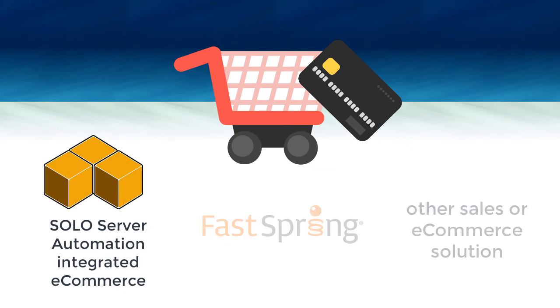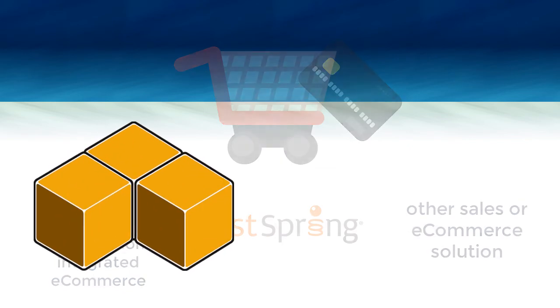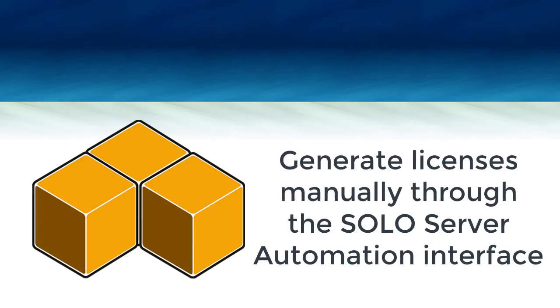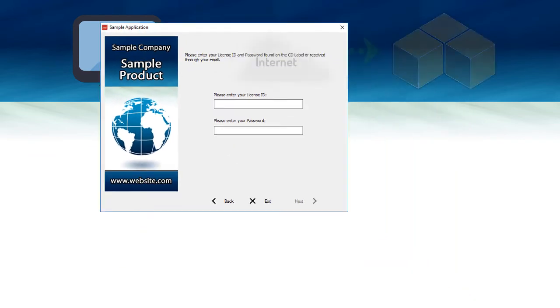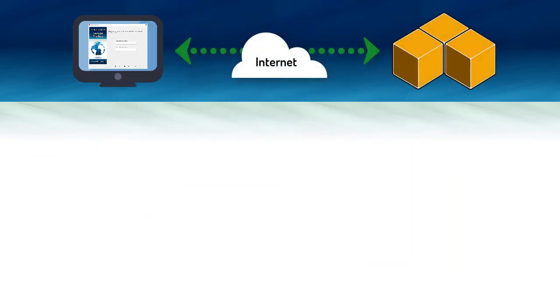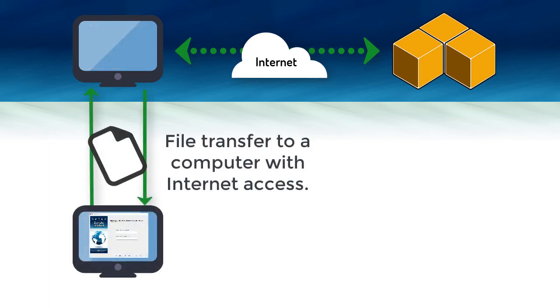Automated online purchases can be performed through SoloServer's integrated shopping cart or a third-party shopping cart. You can also generate licenses manually to distribute to customers if you don't need or want an online purchase mechanism. To activate, the customer will first need to enter their license ID and password, which is similar to a license key or serial number. This license is validated immediately over the internet by SoloServer. There is also an option to activate disconnected computers.